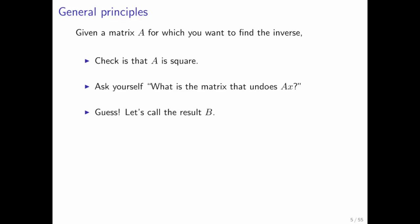So you guess, and you call that result matrix B, and what you can then do is check that indeed, B times A is the identity, and A times B is the identity.